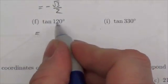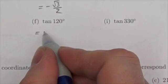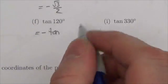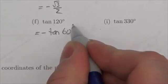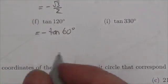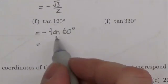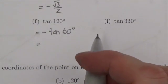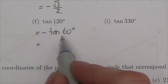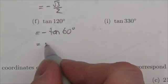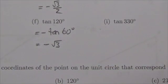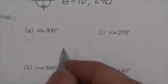Tangent of 120 degrees: 120 is in quadrant 2, and tangent is negative in quadrant 2. The reference angle is 180 minus 120 equals 60 degrees. Using the unit circle or special triangles, tangent of 60 is root 3, so tangent of 120 equals negative root 3.